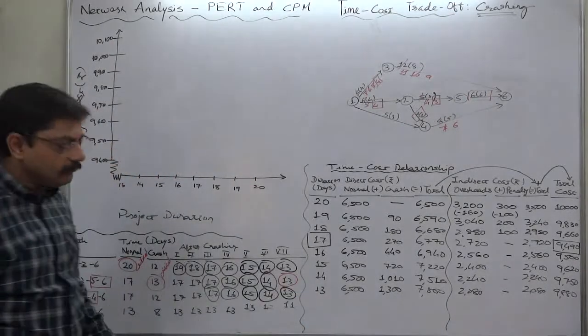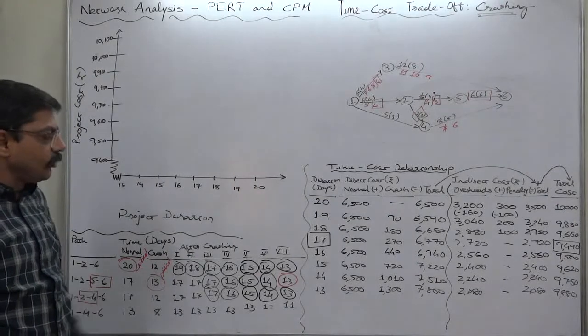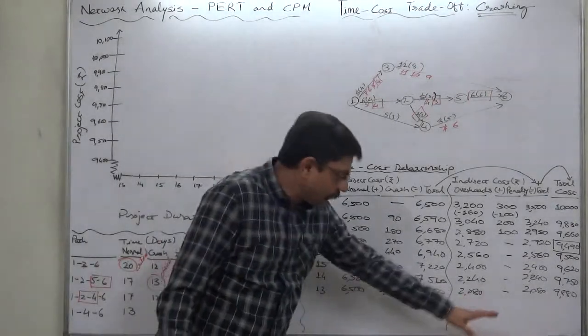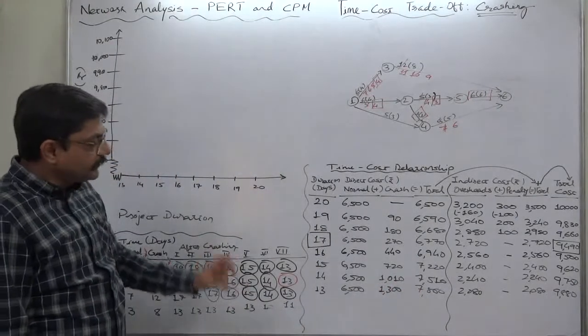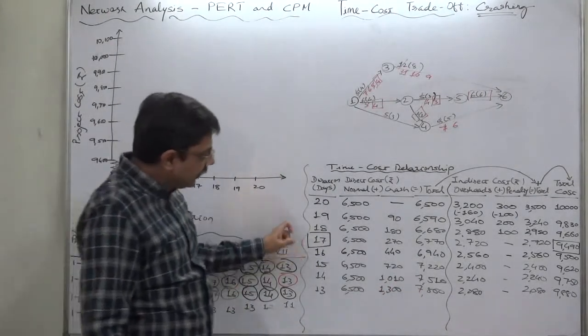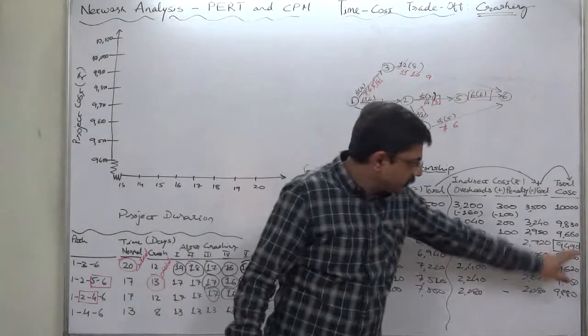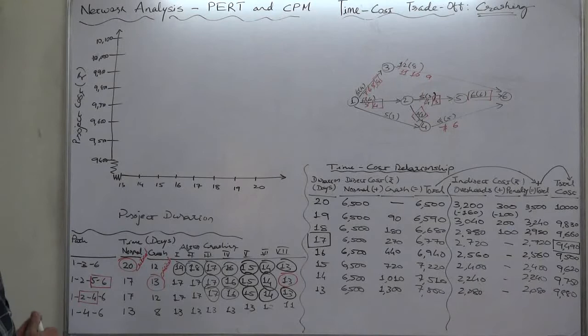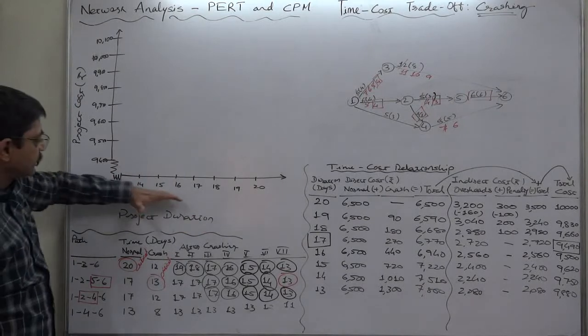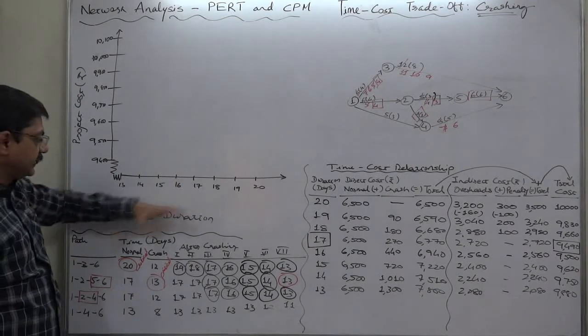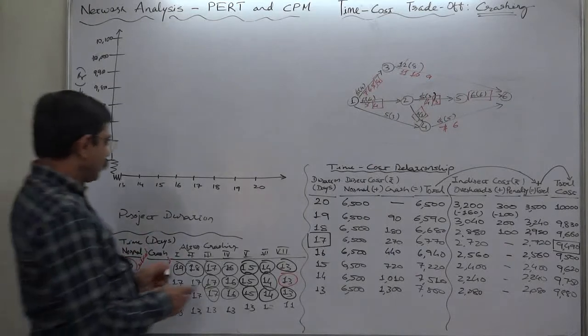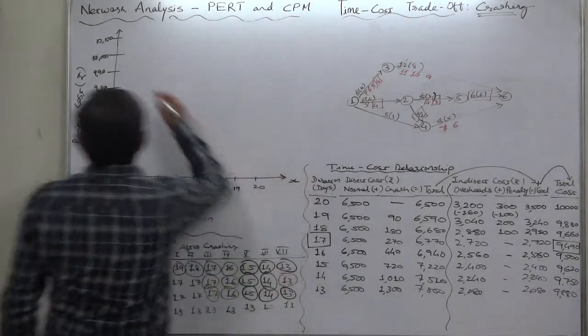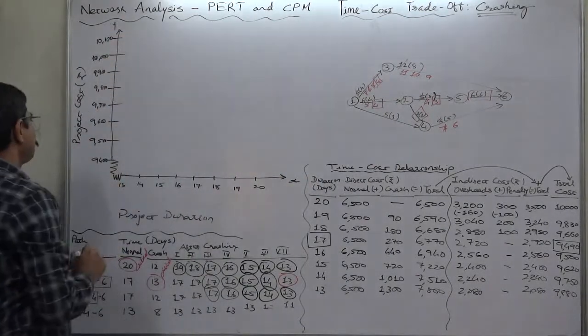This project is going to take at least 13 days to complete. But the optimal duration is 17 days because it has the lowest possible cost. Now let's try to plot the relationship between time and cost on a graph. Please take a graph paper and you can take the scale of 1 centimeter on this x-axis which shows project duration and this shows project cost.